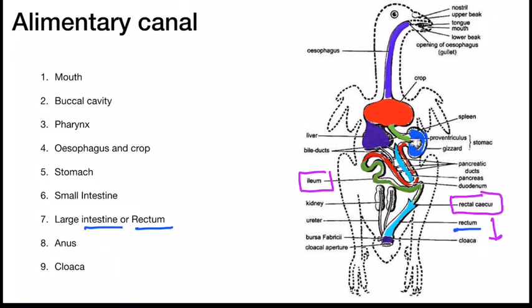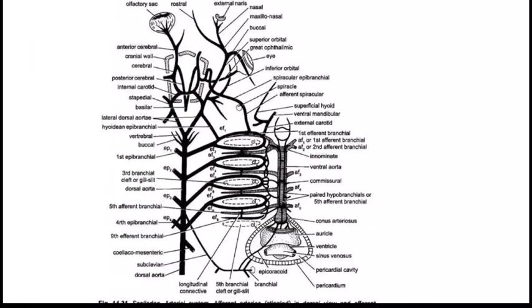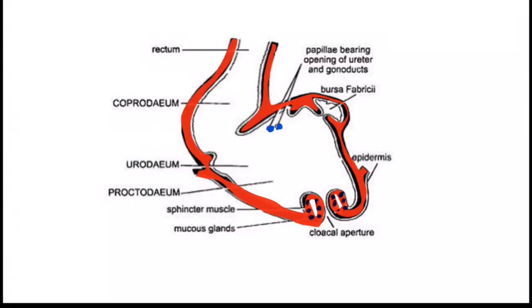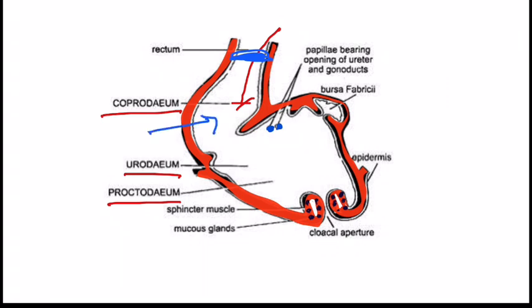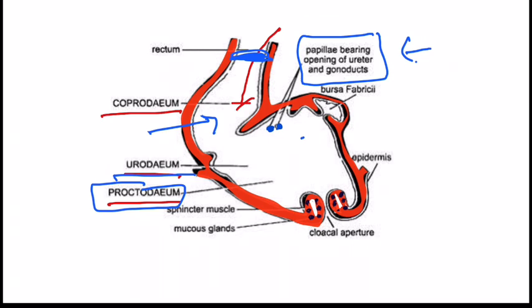The large intestine is divided into two parts: the anterior part is called rectum and the posterior part is called cloaca. The rectum opens into the cloaca by an aperture called the anus, so the anal pore connects the rectum with the cloaca. The cloaca is divided into three chambers: the anterior chamber is coprodium, the second is urodium, and the third is proctodium. The fecal matter is released into the coprodium. The urodium receives the ureters and gonoducts, so gametes and uric acid are released into the urodium.